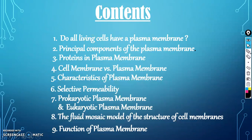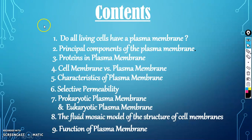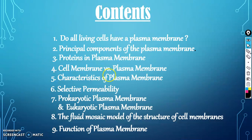So what we are going to discuss in this video — first: do all living cells have a plasma membrane? What are the principal components of the plasma membrane? What are the proteins found in the plasma membrane? What is the basic difference between cell membrane and plasma membrane? What are the characteristics of the plasma membrane? Selective permeability is one of the important properties of biological membranes. Next we will cover prokaryotic versus eukaryotic plasma membrane. Then the fluid mosaic model given by Singer and Nicholson, and finally the functions of the plasma membrane.